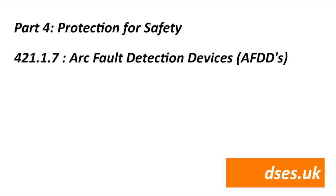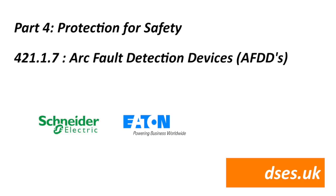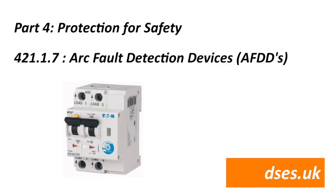18th edition slips AFDDs in as a recommendation — use them if you want — with the expectation that future revisions will make them mandatory. However, at the time of recording I see four problems. Number one: they're currently very expensive, though prices should drop with economies of scale. Number two: they're impossible to get hold of — I've been trying to get a Schneider or Eaton model but none of my usual resellers can get one. Number three: they're huge — an AFDD with RCD and MCB protection takes up three fuseways for one circuit. Consumer units of the future are going to be behemoths. Number four: if regulations ever require them in retrofit applications, I'll be pulling consumer unit replacements from my offered services.